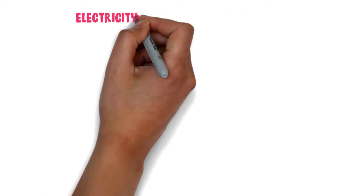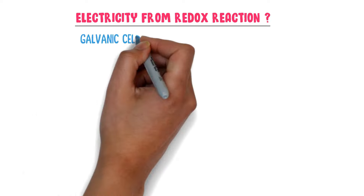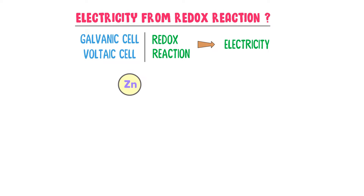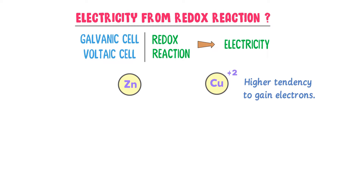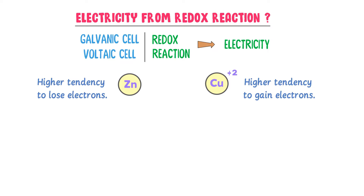We can produce electricity using a chemical reaction. We use a galvanic cell or voltaic cell to generate electricity — that is, a redox chemical reaction is used to generate electricity. For example, consider a zinc atom and a copper²⁺ ion. Copper ion has a higher tendency to gain electrons, while zinc atom has a higher tendency to lose electrons. Thus, zinc atom will lose two electrons and copper will gain two electrons, so two electrons are transferred from zinc to copper.